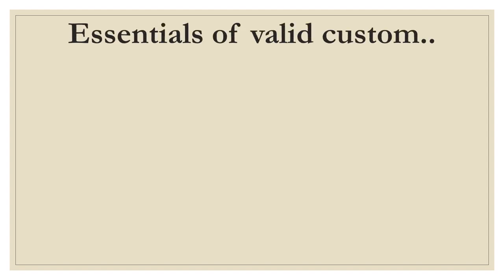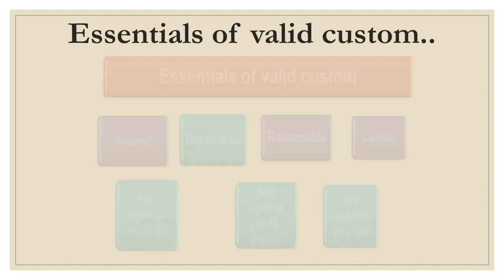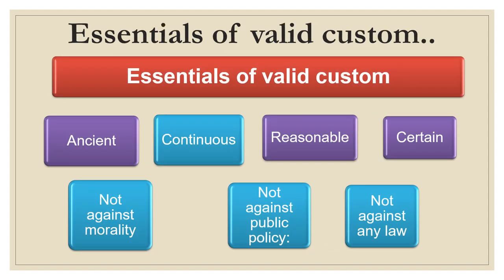Essentials of valid customs: there are basically seven types of essentials of valid customs. The first is ancient, second continuous, third reasonable, fourth certain, fifth not against morality, sixth not against public policy, and seventh not against any law.